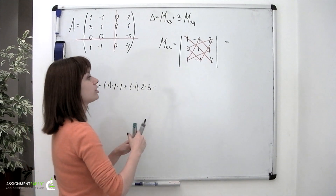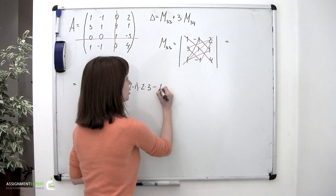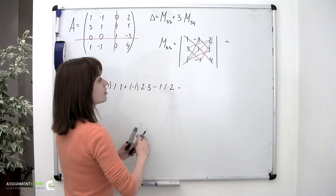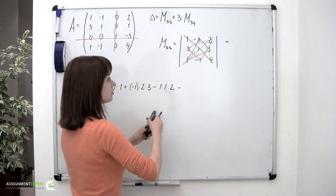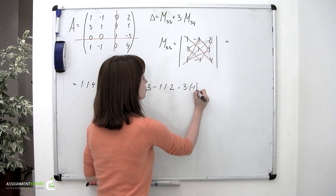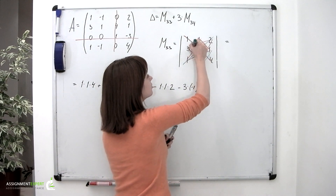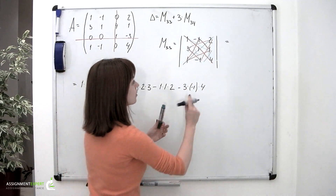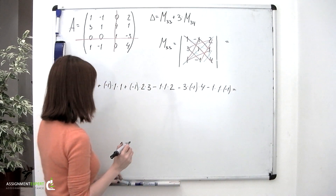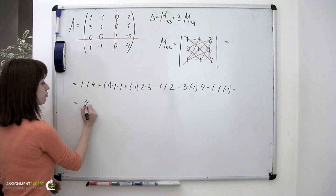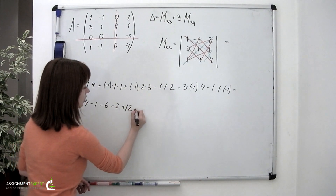Then we add the product of elements along the reverse diagonal: 1 times 1 times 2. Then add the elements in the next triangle: 3 times negative 1 times 4. And the second triangle: 1 times 1 times 4, then 1 times 1 times negative 1. So we have 4 minus 1 minus 6 minus 2 plus 12 plus 1.